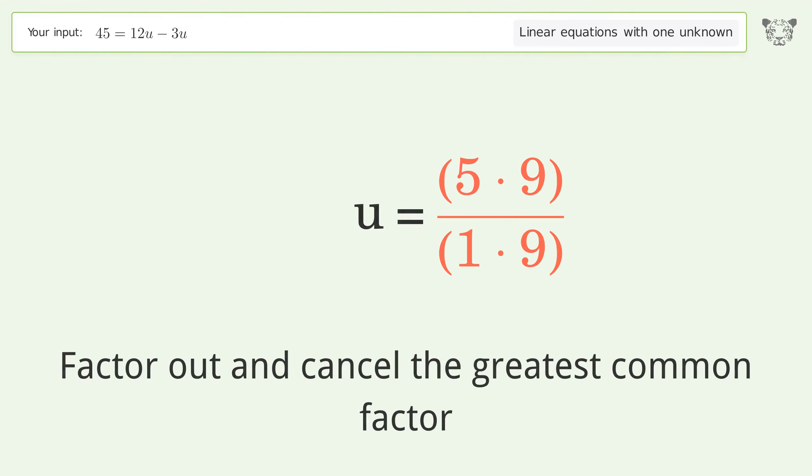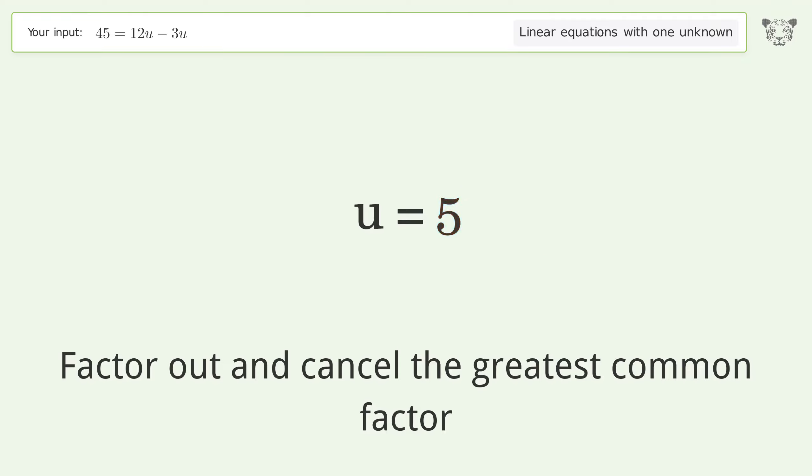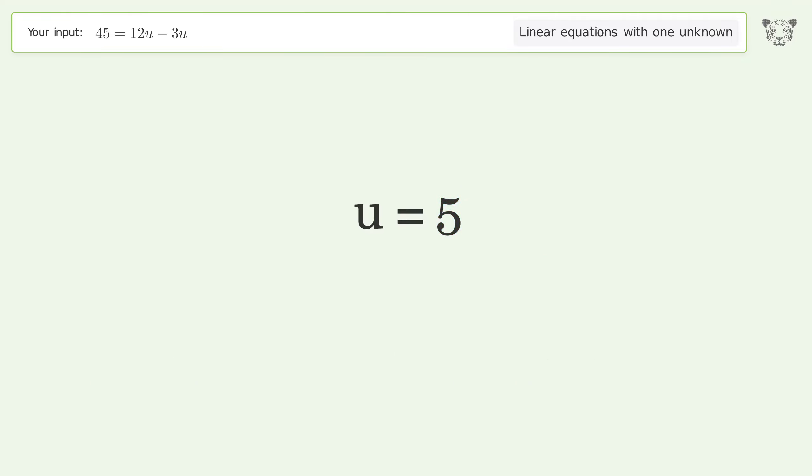Factor out and cancel the greatest common factor. And so the final result is u equals 5.